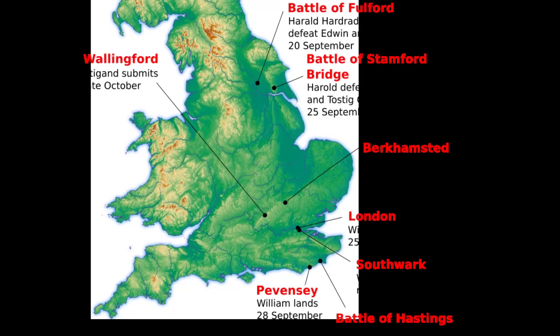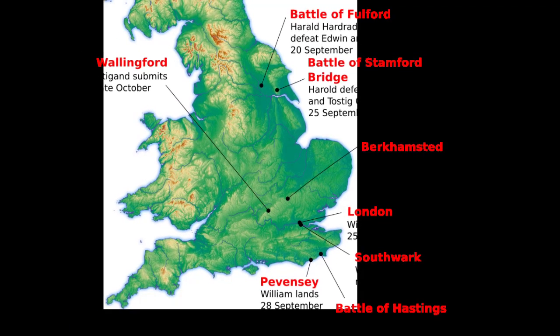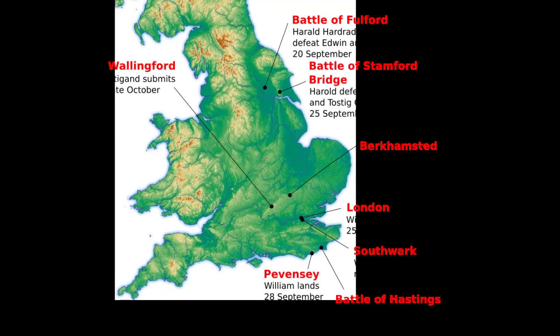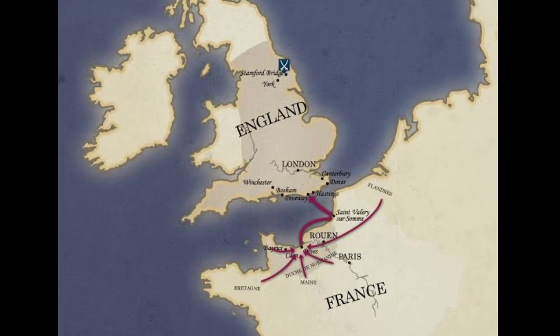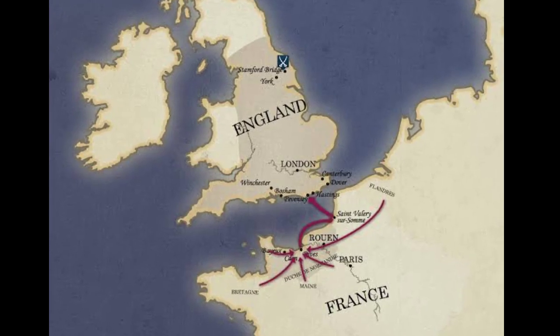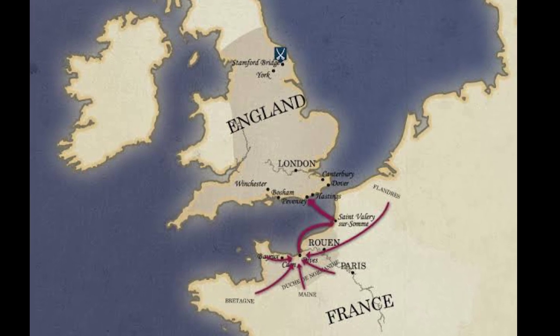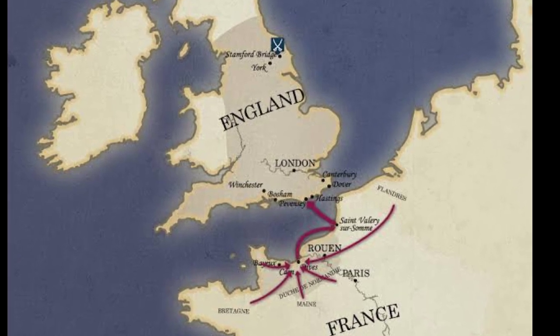The Norman Conquest, or the Conquest, was the 11th century invasion and occupation of England by an army made up of thousands of Norman, Breton, Flemish, and French troops.